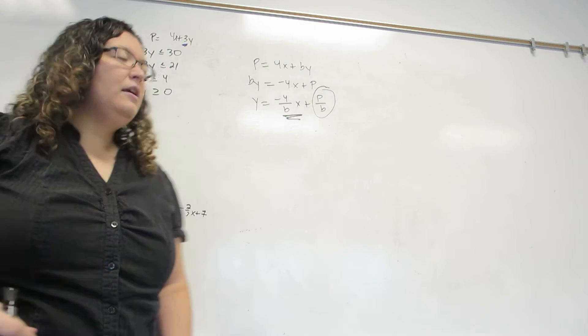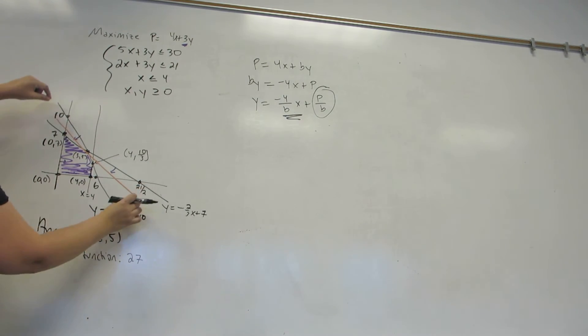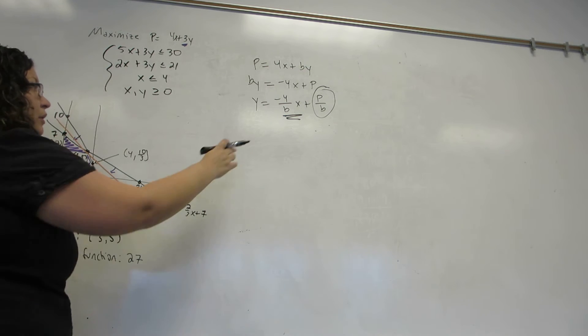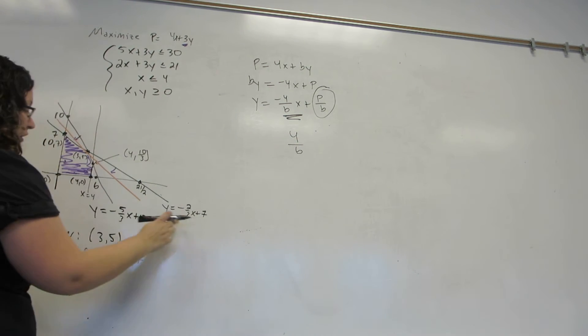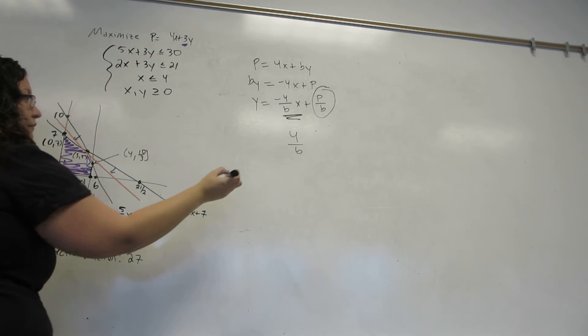It is the same line, the orange line, and we're still imagining that we're wiggling it. Once again, it could run into this line or this line, and I don't want it to go past them. So my slope, 4 over b, must be between 2 thirds and 5 thirds.